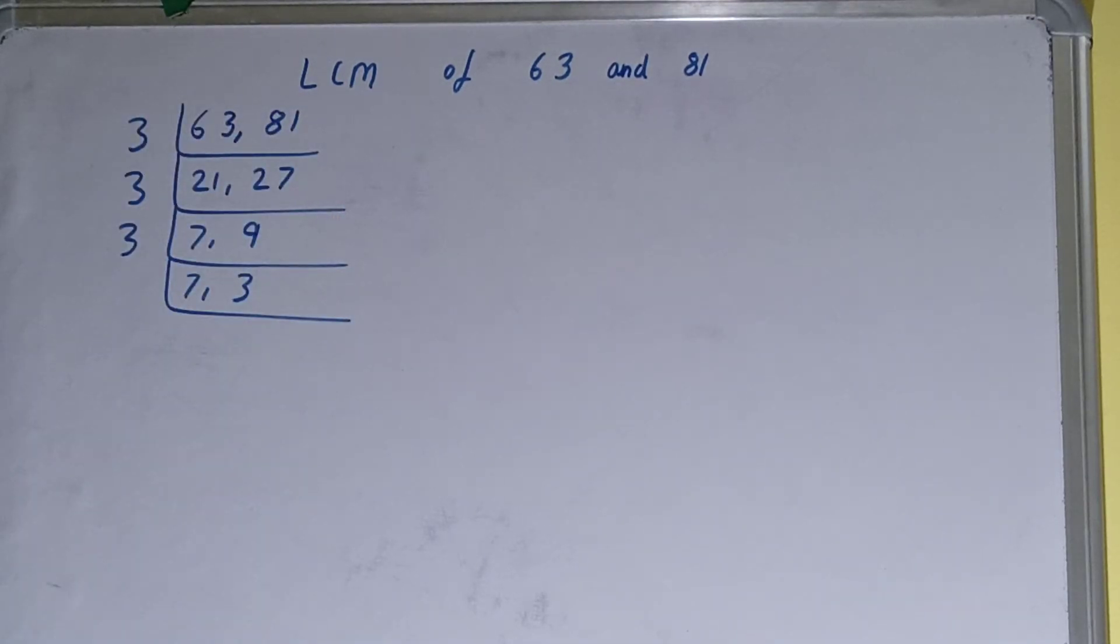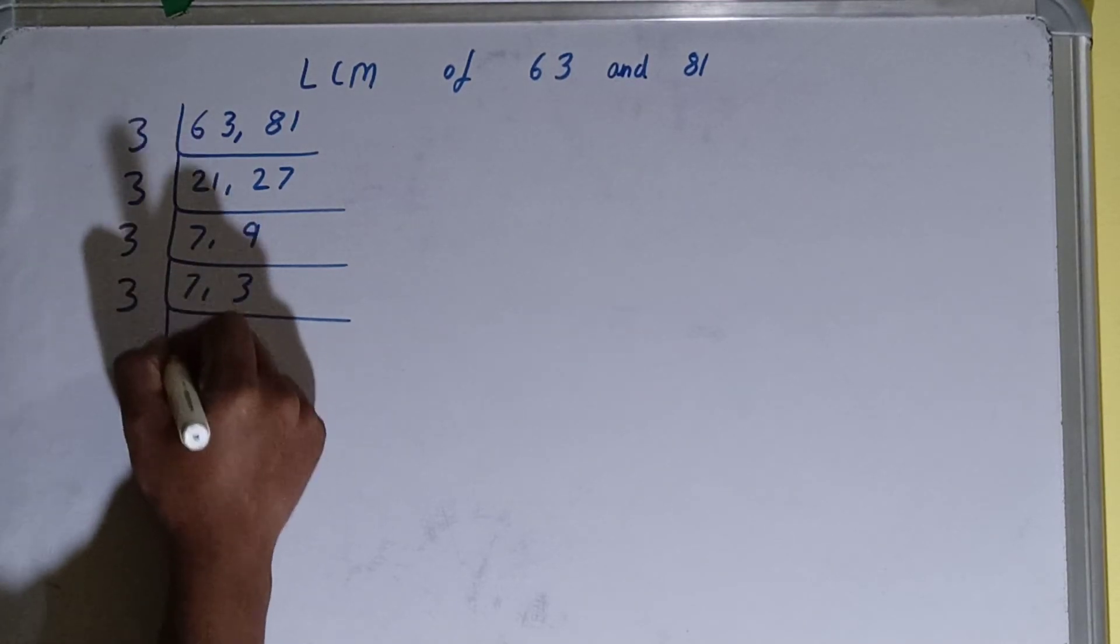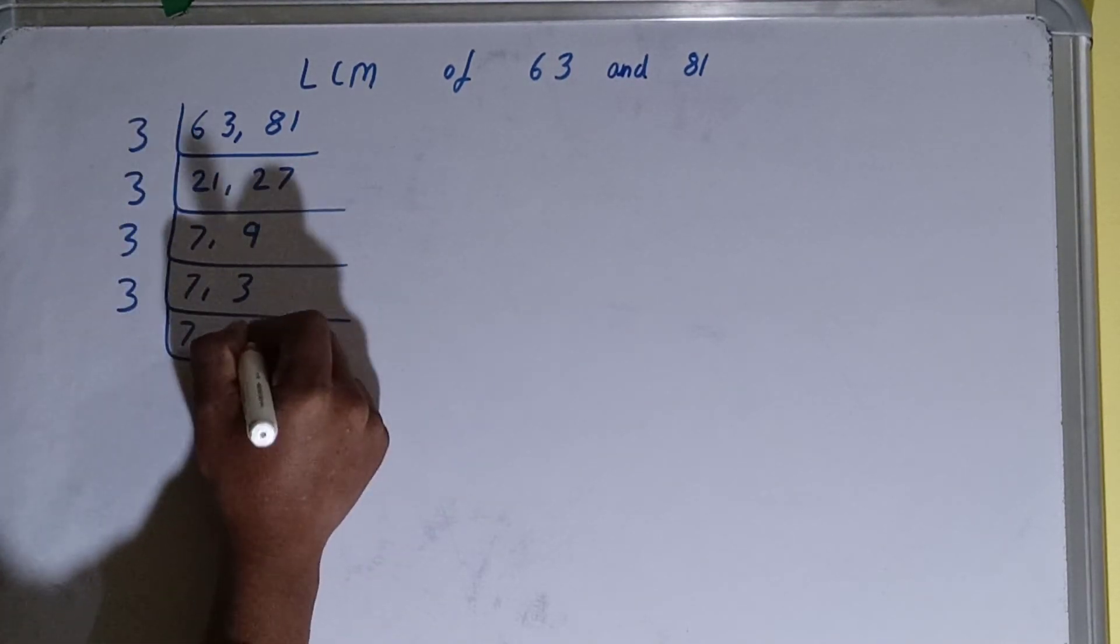Now again, if we check, then the second number is divisible by 3. So we'll divide and we'll have 7, 1.